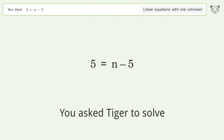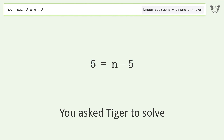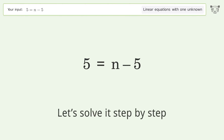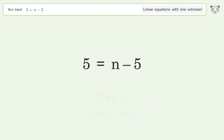Tiger is asked to solve a linear equation with one unknown. The final result is n equals 10. Let's solve it step by step — swap sides.